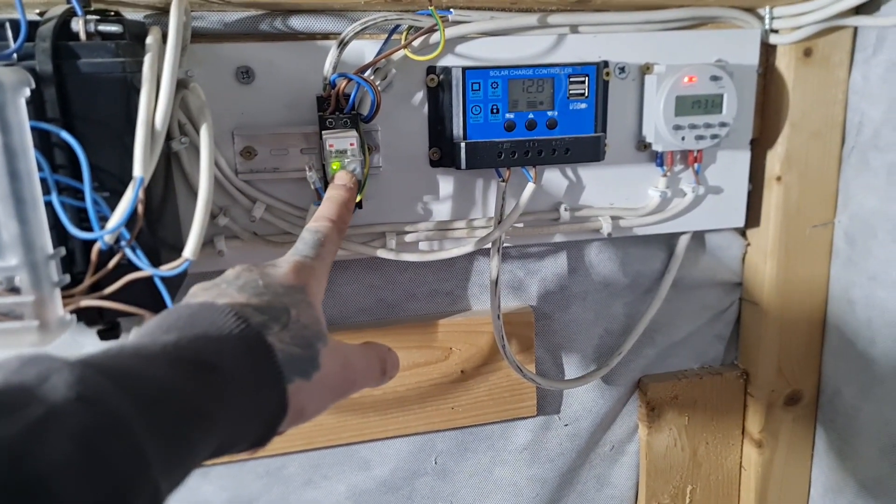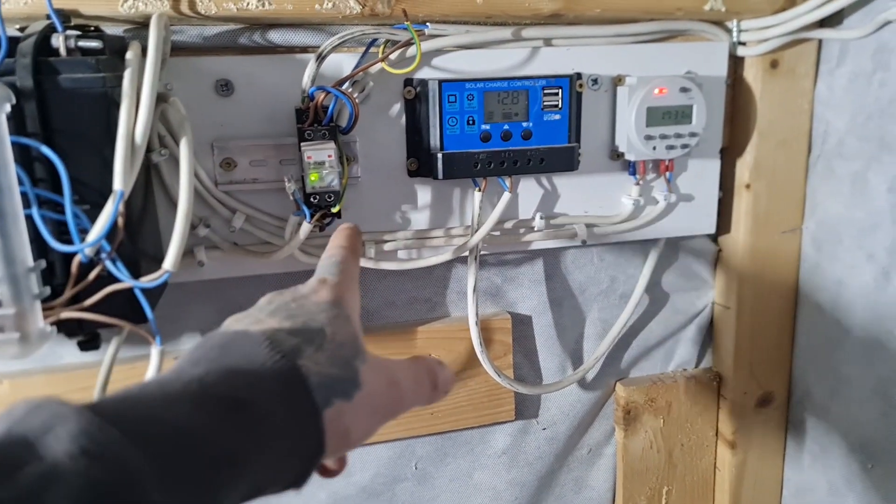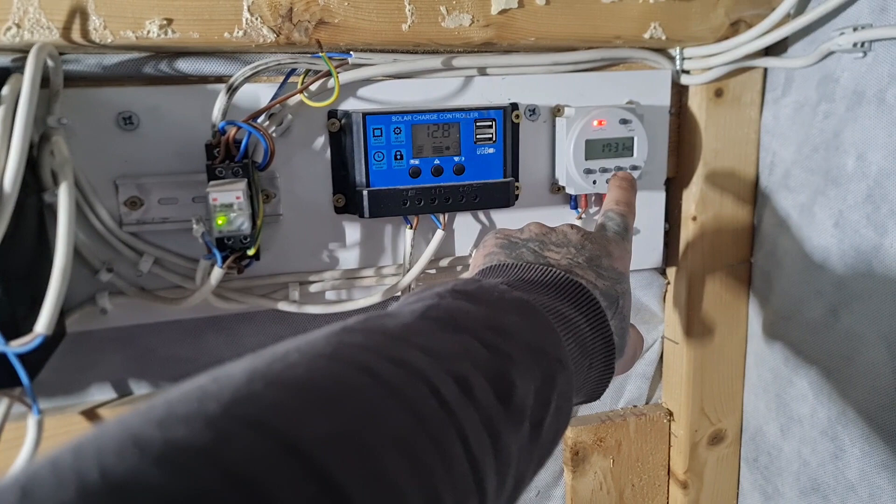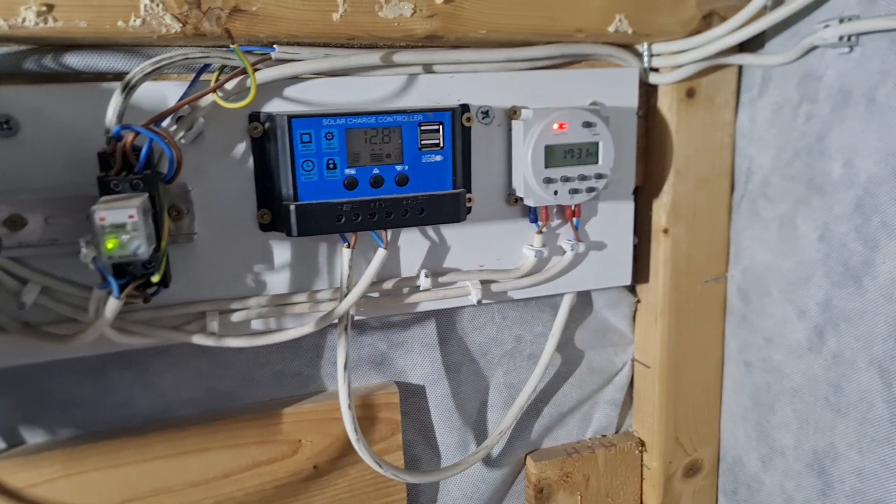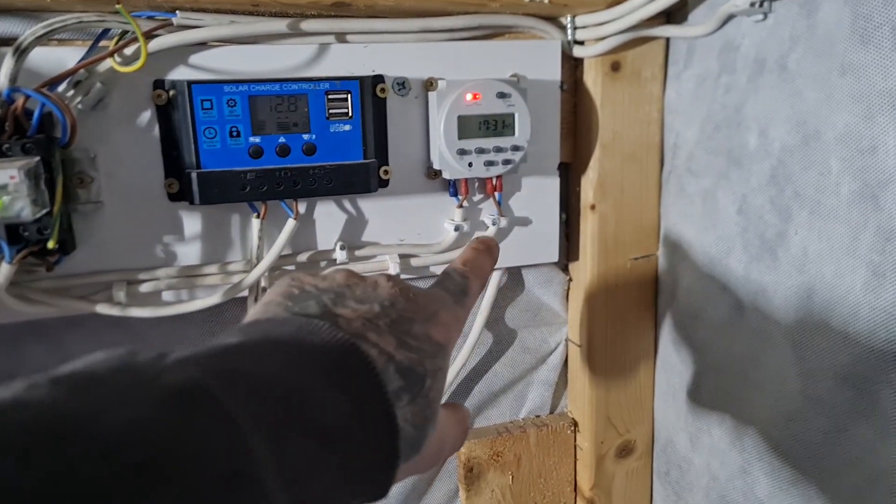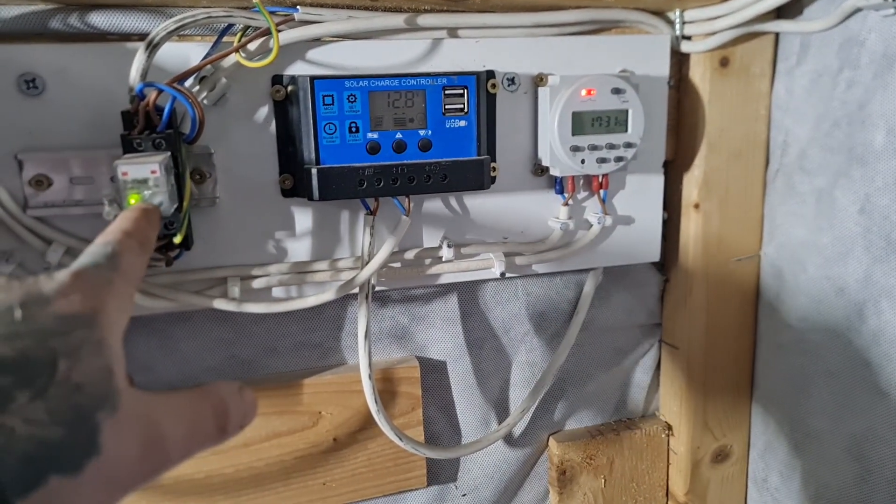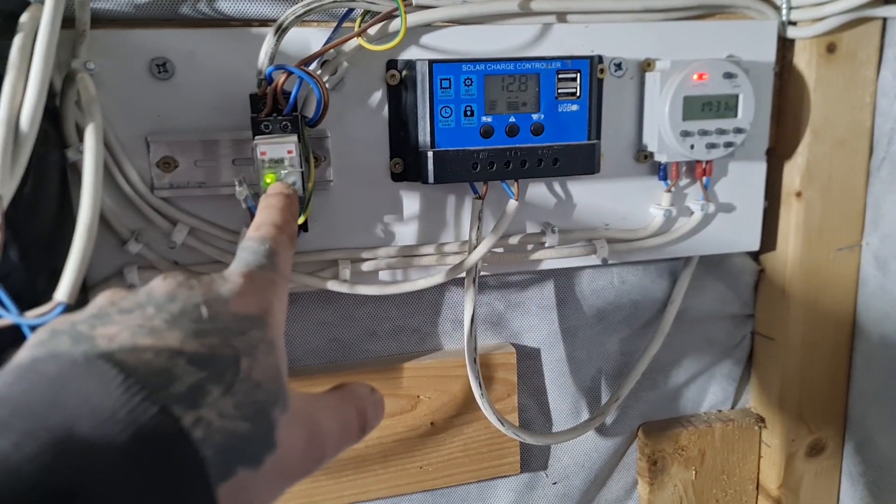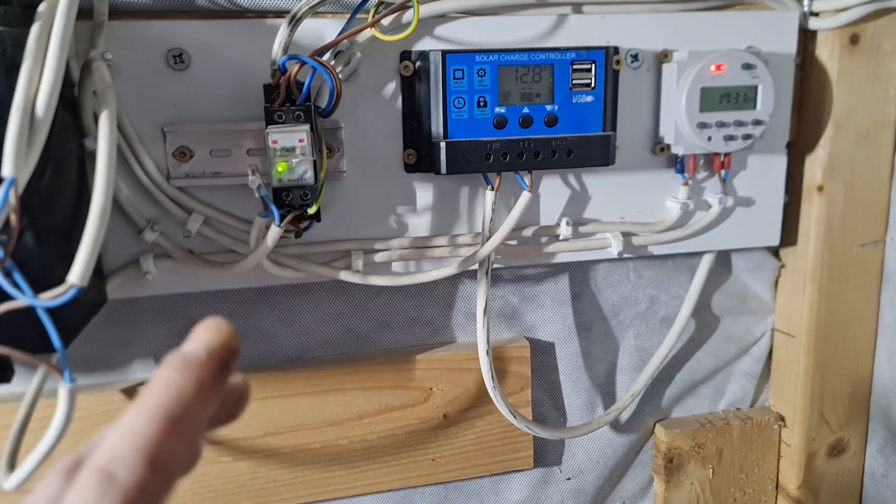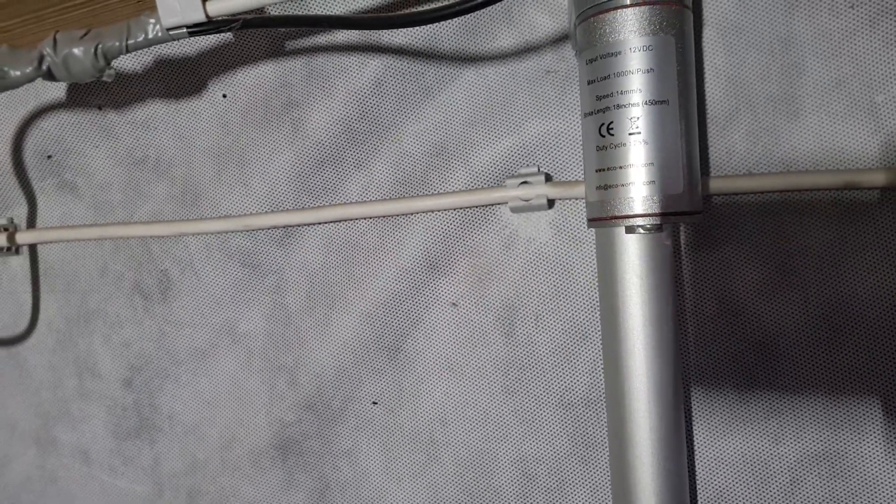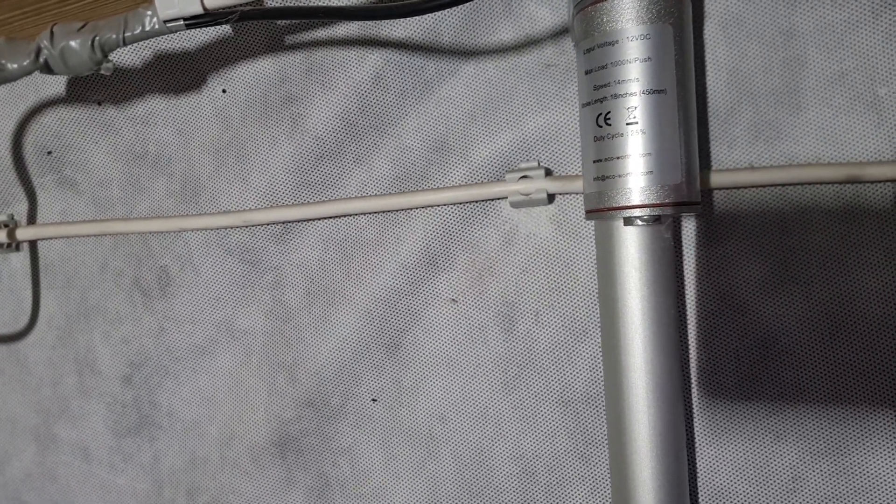This power relay is a power splitter from the battery and it's connected to the timer. Each time the signal comes from the timer, this relay is switching up its polarity.